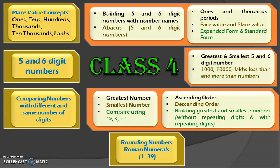The learning outcomes include place value concepts, where we will be dealing with 5 and 6 digit numbers. We will be learning how to build numbers using the 1s, 10s, 100s, 1000s, 10,000s and lakhs place. We will also learn to perform number activities like finding the greatest and smallest 5 and 6 digit numbers, and finding 1000, 10,000s and lakhs less than and more than numbers.